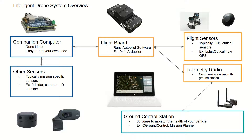The sensors that you interface with the companion computer are more mission-specific. Typically, these types of sensors are like 2D LiDARs, 3D LiDARs, cameras, IR sensors — stuff to help with the actual purpose of your autonomous drone.